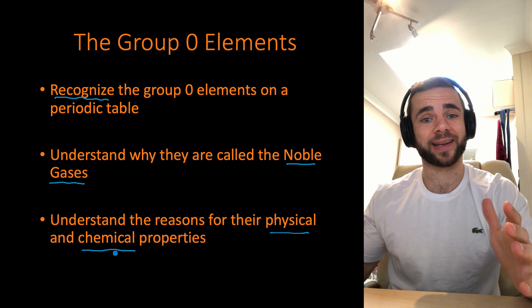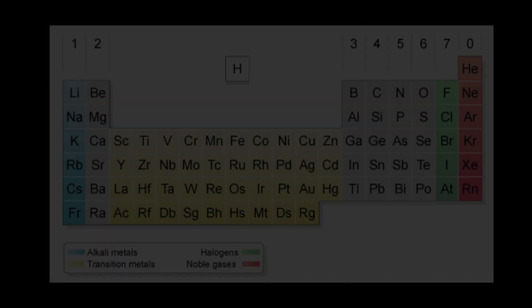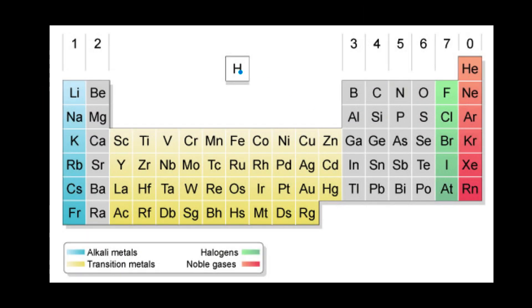So let's jump straight in. Here we have just a generic periodic table. If we have a look over at this right hand side, these are your group zero elements. You have helium, neon, argon, krypton, xenon, and radon. Now sometimes you may see a periodic table that lists this as group eight. It's going to be group zero or group eight.